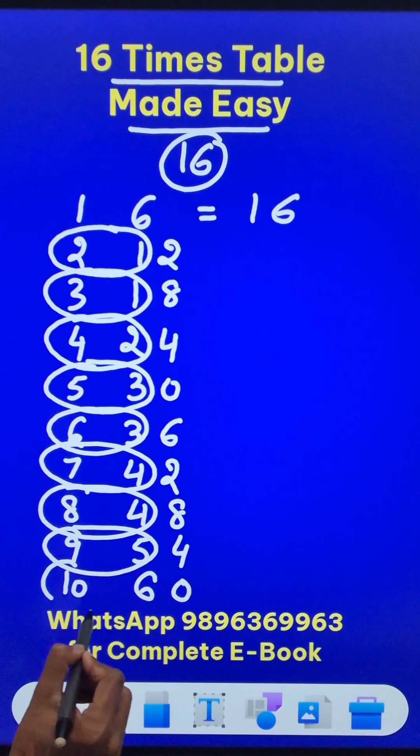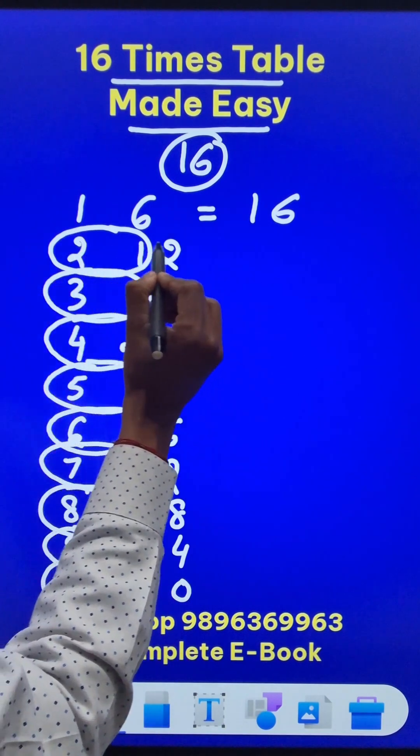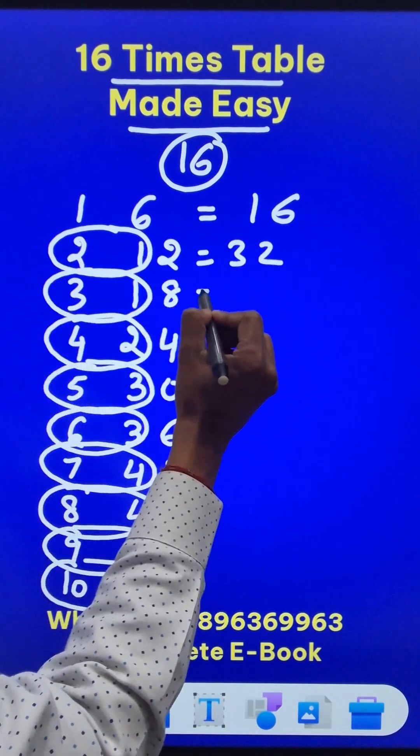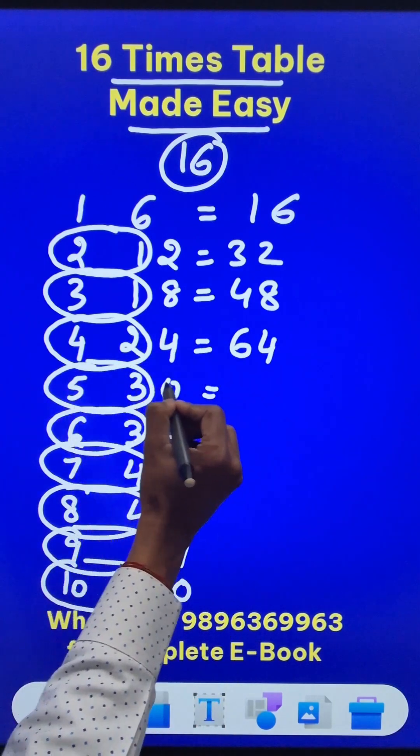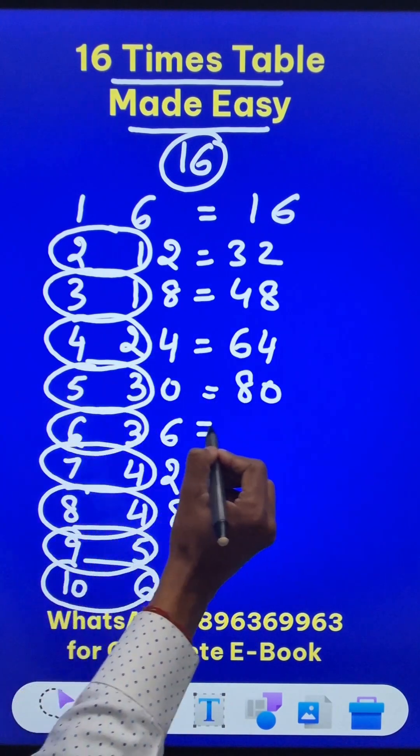Now just add: 2 plus 1 is 3 and the 2, 3 plus 1 is 4 and the 8, 4 plus 2 is 6 and the 4, 5 plus 3 is 8 and the 0, 6 plus 3 is 9 and the 6.